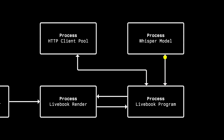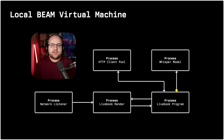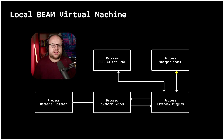The Whisper model performs transcription when its process receives a message with a file path. It's processes all the way down, each communicating by passing messages. Because there's no reliance on shared memory addresses, this approach can scale beyond a single machine. A clustering mechanism is built into the Beam, letting messages be sent to and received from different computers over a network.